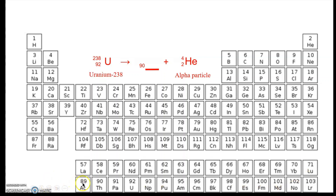We look at the periodic table and find that the element with 90 protons is thorium. We write in the symbol, then solve the mass number: what plus four equals 238? That's 234. So we know it's not just thorium, but specifically thorium-234. Let's try another: radon-222 also breaks down by emitting an alpha particle, using the same drill.